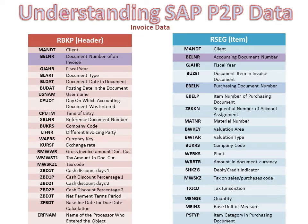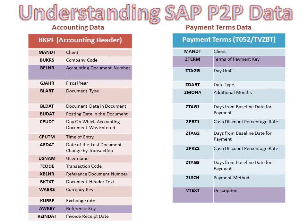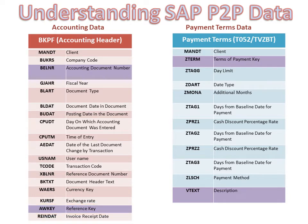The invoice data is part of the RBKP header table and the RSEG line item table. The header is linked to the invoice item table via the invoice number field, namely BELNR. The invoice line item table also holds PO header and line item numbers, which get updated with the PO header and item against which the invoice is posted. The accounting data inside SAP is part of the BSEG item and BKPF header tables, holding all accounting documents inside SAP irrespective of the business process. There is a field in BKPF called AWKEY, which provides a common linkage between the invoice and the accounting document generated against it.